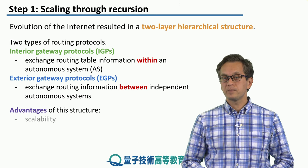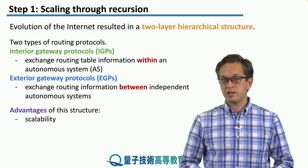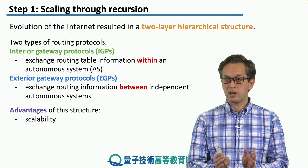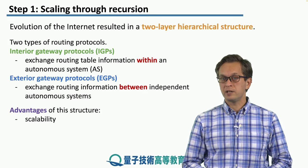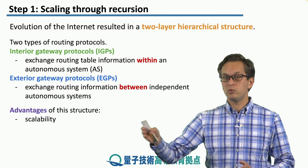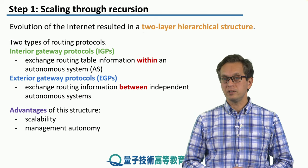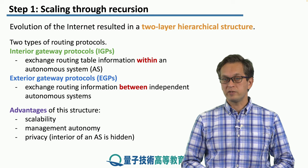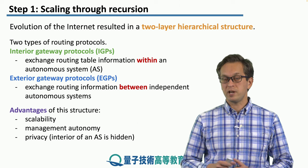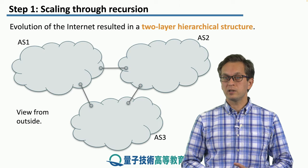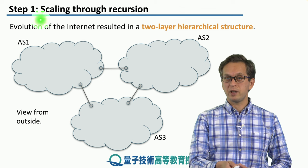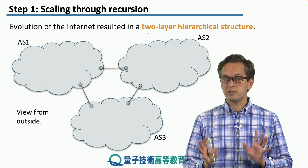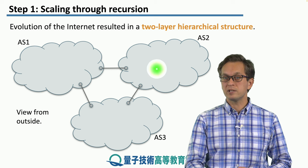The advantages of this structure are the following. First, it leads to scalability — when we manage our network, we don't have to think about all the other networks. The IGPs take care of our local network, and the EGPs tell us how to move between networks. Also, it's easy to manage autonomy. And lastly, it guarantees privacy, because the interior of a network is hidden from the outside. This is illustrated by a picture showing three networks represented by AS1, AS2, and AS3. They are all connected, but from the outside, we don't know what's inside these networks.